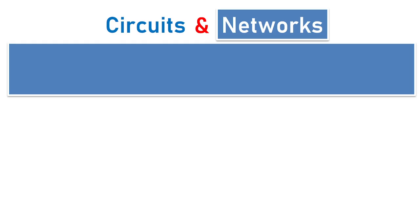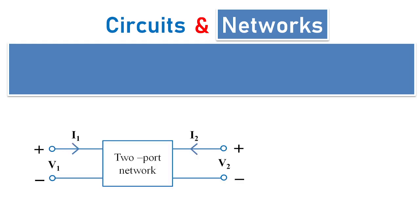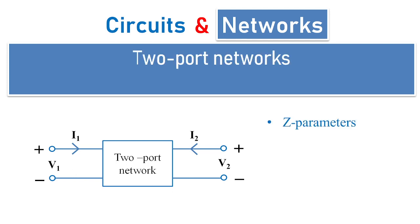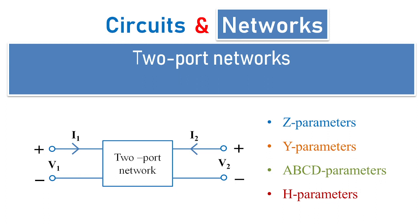Welcome to another session of circuits and networks. In today's class we are going to see about two-port networks where we are going to see Z parameters, Y parameters, ABCD parameters, and H parameters basics. This particular class we are going to treat as class 1 and we'll see the basic formulas involved with two-port networks. Later on we will interpret our results with the rest of the parameters and also see the interrelationship between one parameter and another.